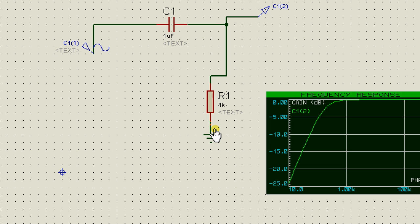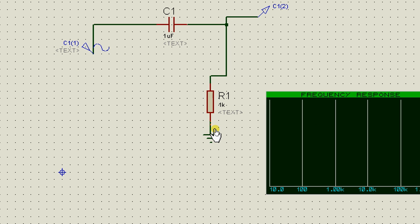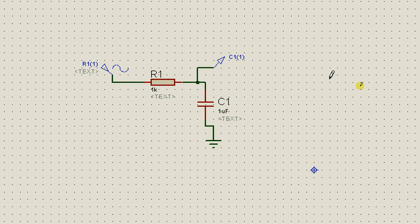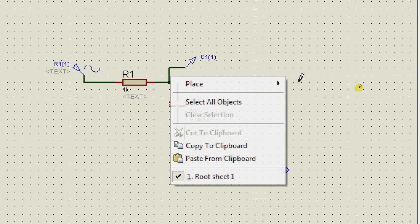Now if you combine the low pass filter and the high pass filter in series what you're going to get is something called the band pass filter. Now what the band pass filter does is it basically allows frequencies only in a particular band to pass through.